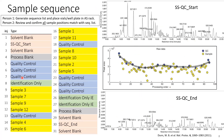Here's an example of a typical sample sequence. We start with solvent blanks on the platform, then the system suitability check, then a solvent blank again and a process blank. Then we start injecting quality controls to condition the system, because there could be active sites on the chromatographic columns that need to be saturated. After that, we typically run a sample with DDA, as we heard this morning from Daniel and Farina, where we fragment all the metabolites to get data for annotation. All other samples are recorded in full scan mode with this strategy.